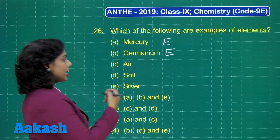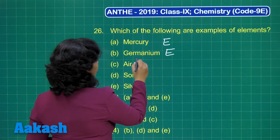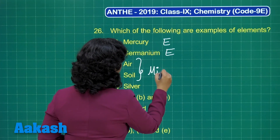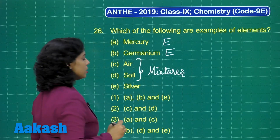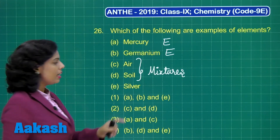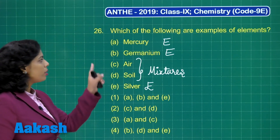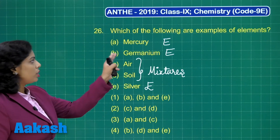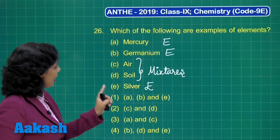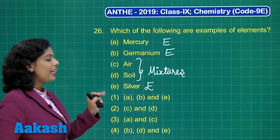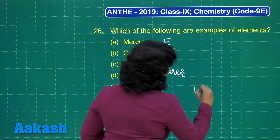If I talk about air, that's a mixture. If I talk about soil, that is also a mixture — so these two are not elements. Further, silver is once again a metal and that's why it's an element. So there are three elements present here — A, B, and E are representing elements. Option 1 is the correct answer.